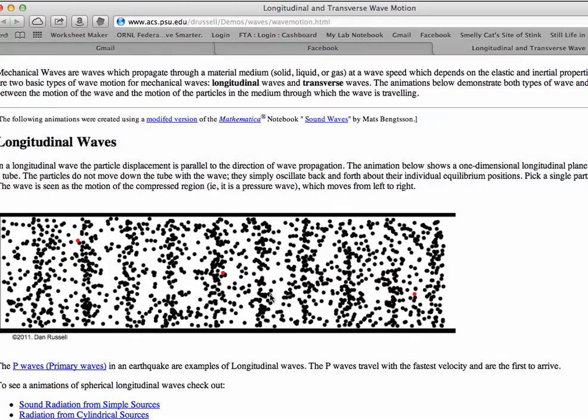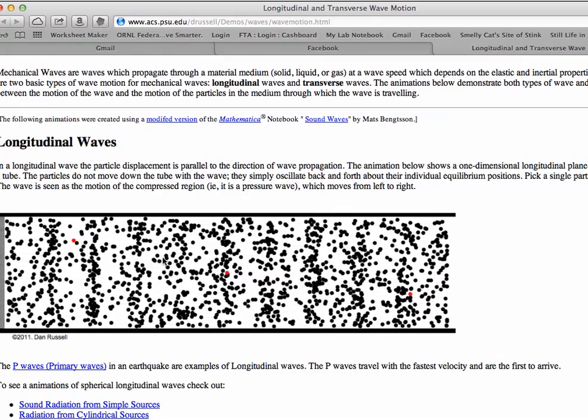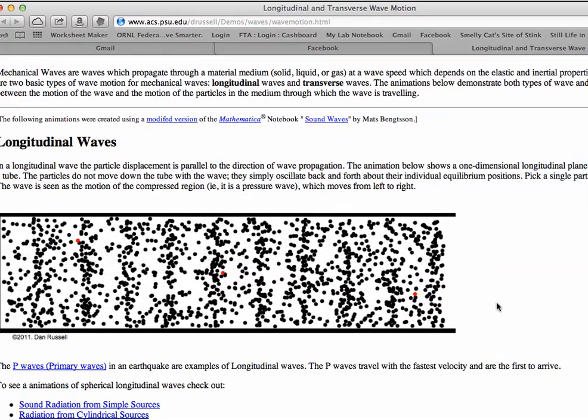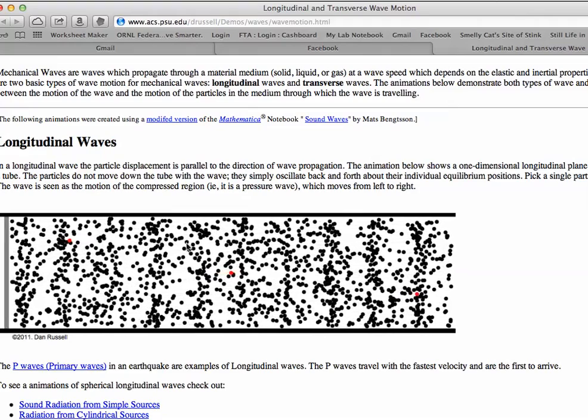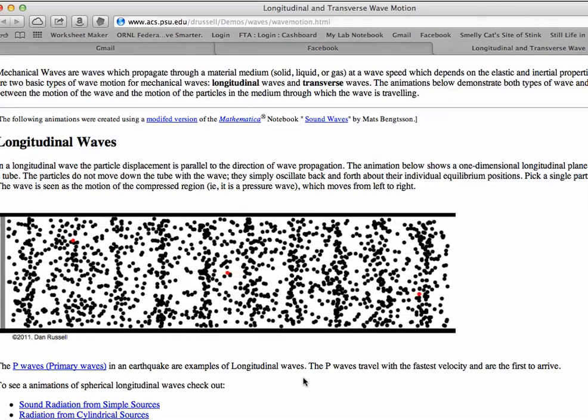Here's a longitudinal wave, where the particles and the wave are moving left to right. And you can watch. They highlighted a few red ones. So you can see that they're moving a small amount left to right, but not traveling the whole length.